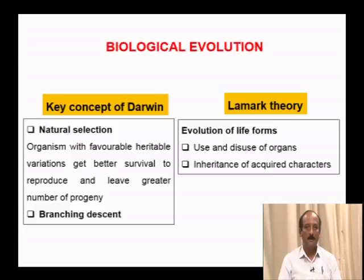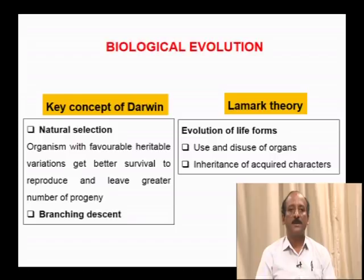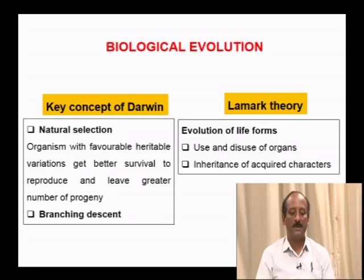Major key concepts of biological evolution include the concepts of Darwin and Lamarck. Darwin's key concepts include natural selection, evolution, and branching descent. According to natural selection, organisms with favourable variations get better survival, reproduce more, and leave a greater number of progeny. Lamarck's key concept involves evolution of life forms mainly due to use and disuse of organs and inheritance of acquired characters.